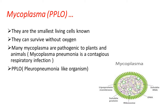In plants also, mycoplasma causes a number of diseases. The best example is bunchy top disease in papaya plants. It will also cause dwarf disease in mulberry. So we can say that mycoplasma is pathogenic to plants as well as animals.